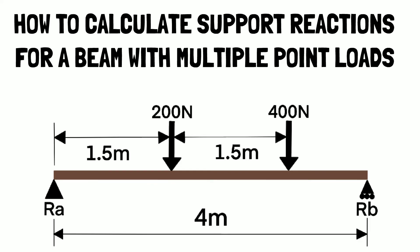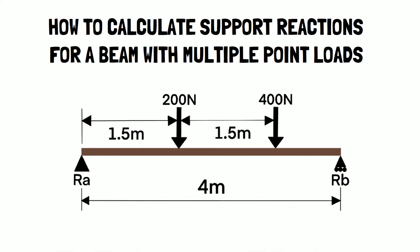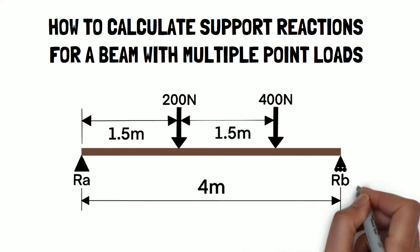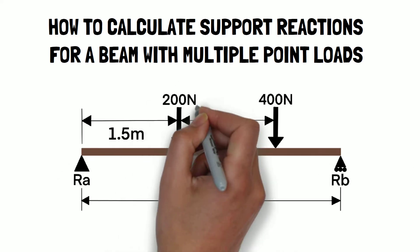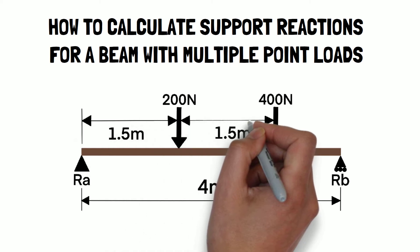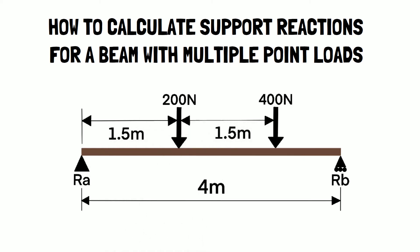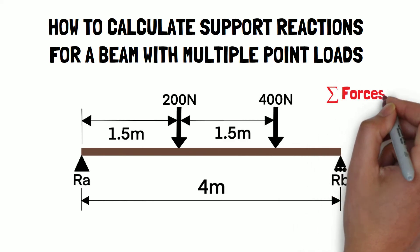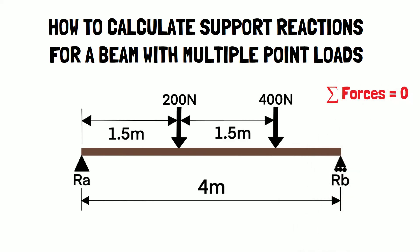If we look at the beam we can see that it is four meters in length and has supports at either end labeled RA and RB. It has a first 200 newton load applied 1.5 meters from the left and a second 400 newton load applied 3 meters from the left. As the beam is stationary the forces acting on it must cancel out and it is said to be in equilibrium. Our goal is to find the support reactions at RA and RB.